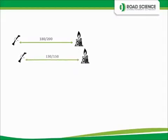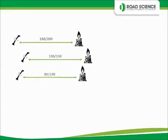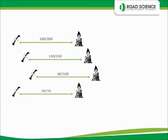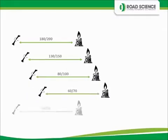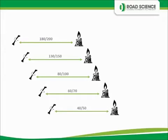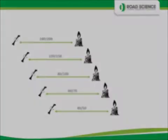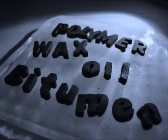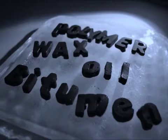By going to a harder grade of bitumen, all we're doing is increasing the temperature at which it melts and also increasing the temperature at which it becomes brittle. The important thing to note is that when we use a standard grade of bitumen, we can only manipulate the high temperature properties or the low temperature properties — we can't manipulate them independent of each other. There are ways we can manipulate both, and that's through using modifiers.